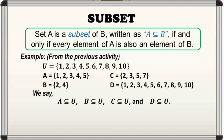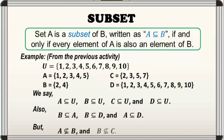With the same reasons, set B is a subset of set A, set B is a subset of set D, and set A is a subset of set D. But set A is not a subset of set B dahil hindi lahat ng elements kay set A ay nandoon kay set B. Also, set B is not a subset of set C dahil mayroong elements kay set B na hindi makikita kay set C.